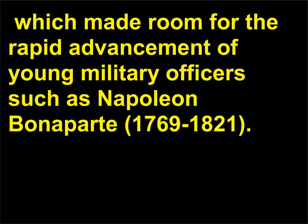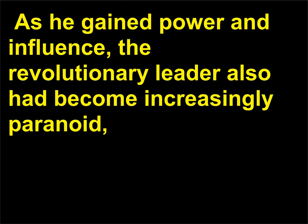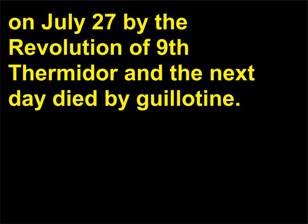which made room for the rapid advancement of young military officers such as Napoleon Bonaparte, 1769–1821. The reign of terror ended on July 28, 1794, when Robespierre himself was put to death. As he gained power and influence, the revolutionary leader had also become increasingly paranoid, even putting two of his friends to death in 1794. He was overthrown on July 27 by the revolution of Ninth Thermidor and the next day died by guillotine.